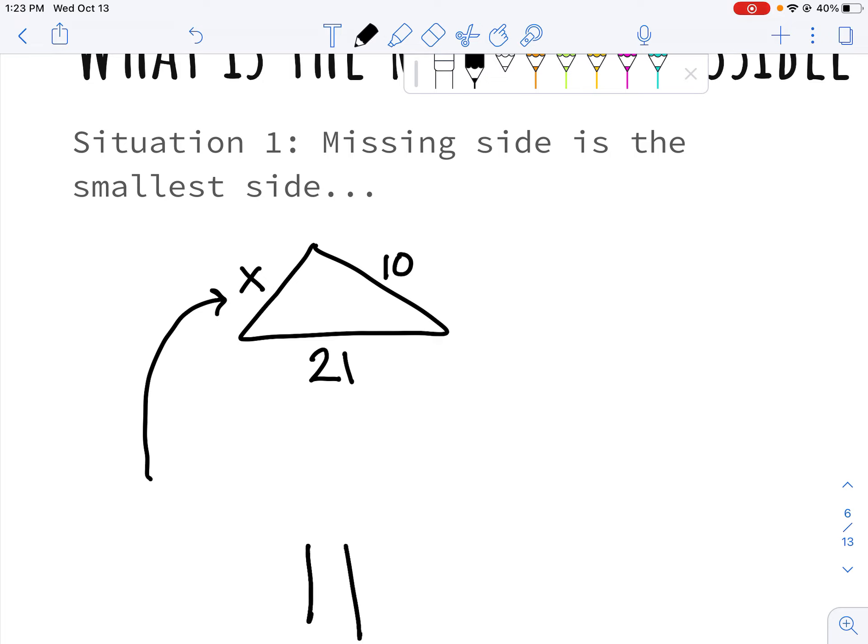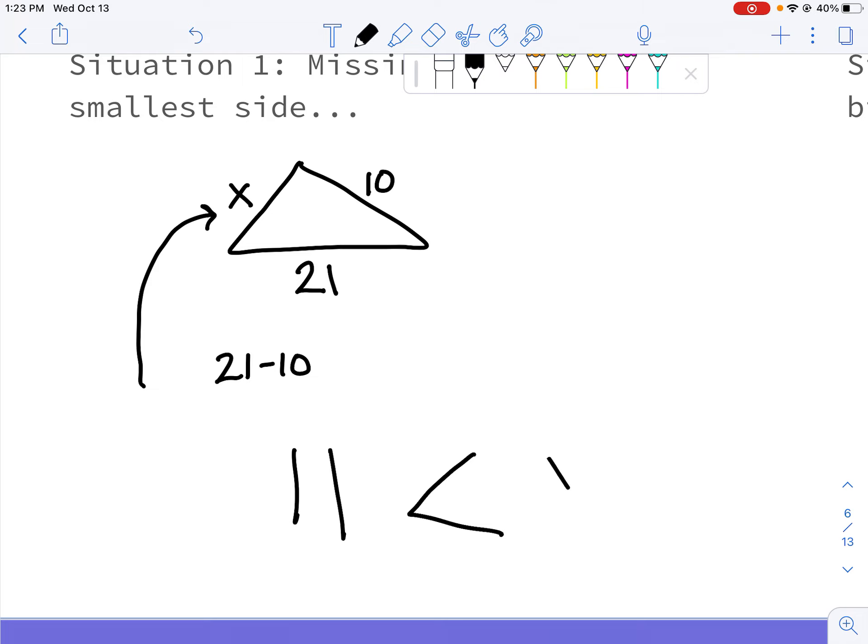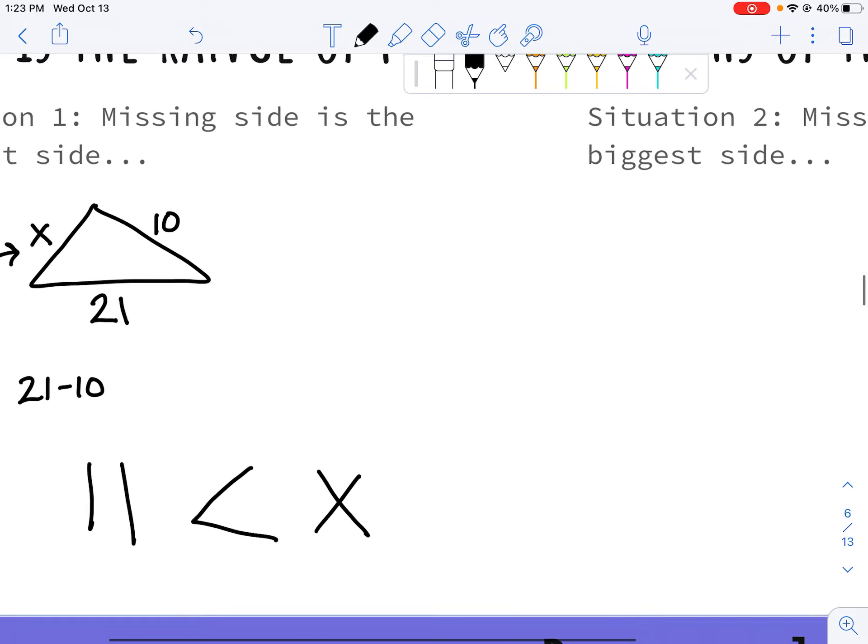So I'm going to put 11 in here. And if I want a mathematical shortcut, I'm just doing 21 minus 10. 11 is smaller than x. I can do 11.2. I can do 11.7. I can't do 11 itself, which is why I don't have a less than or equal to.